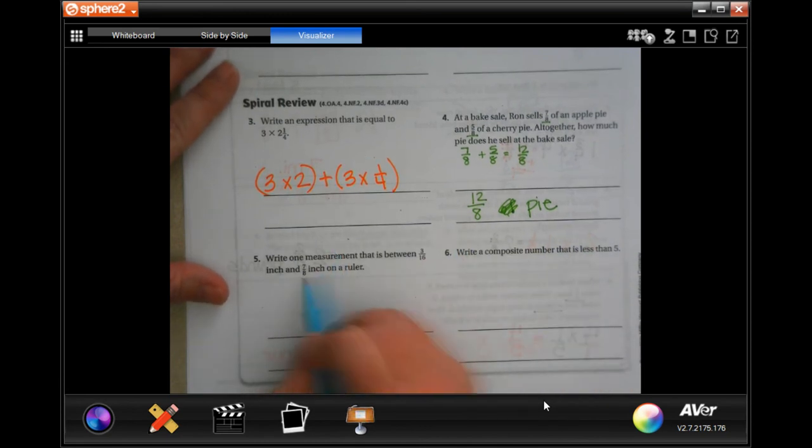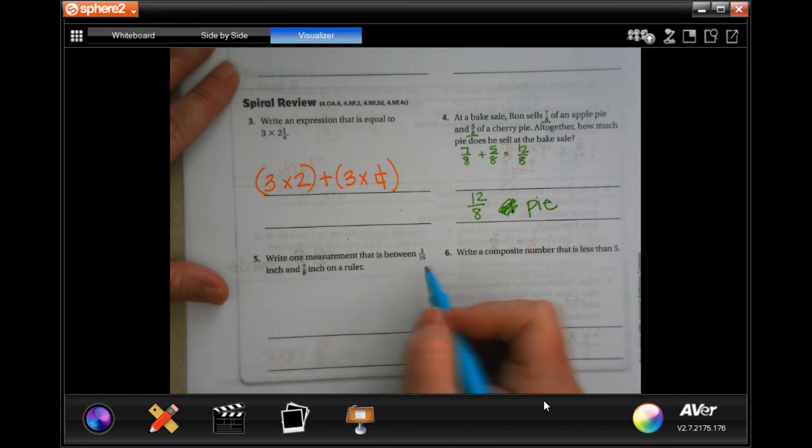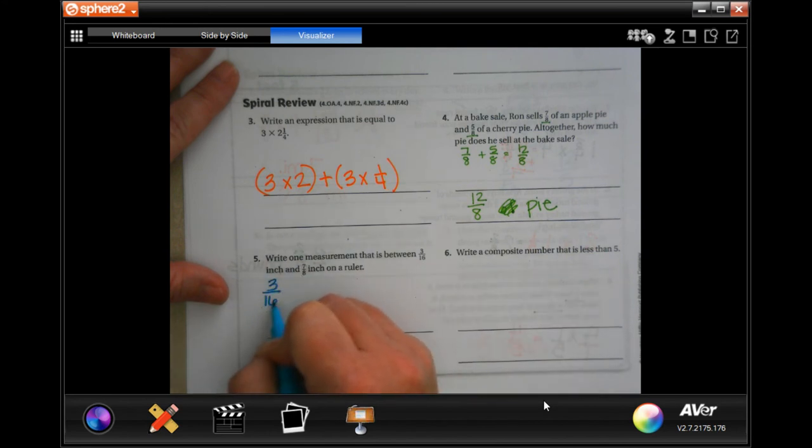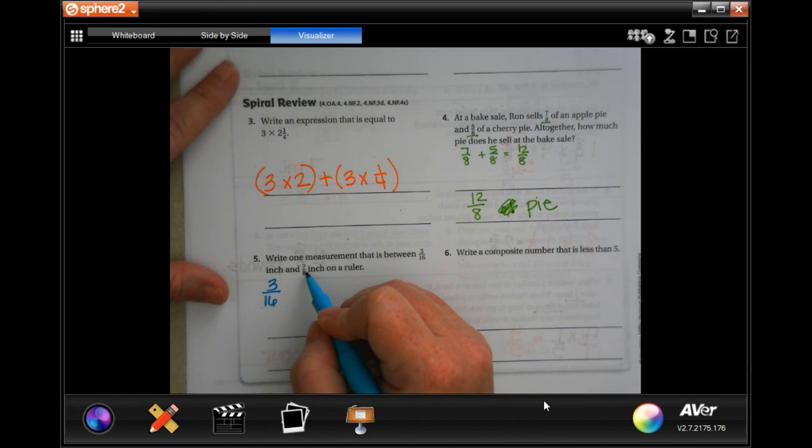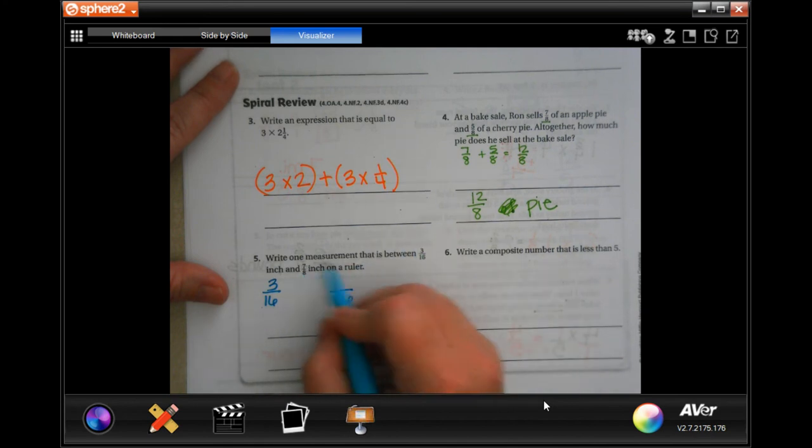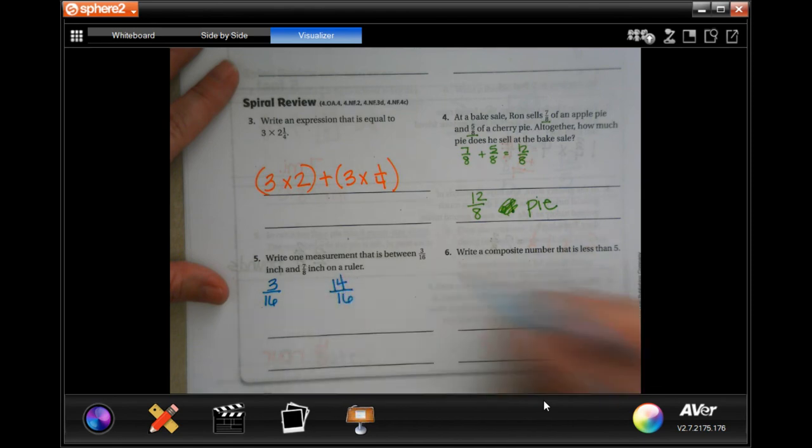Well, the common denominator is going to be sixteen between eight and sixteen. So, we have three-sixteenths. Then, in order to get eight to sixteen, I had to multiply it by two. So, I'm going to multiply the top by two. So, I get fourteen. Seven times two is fourteen.